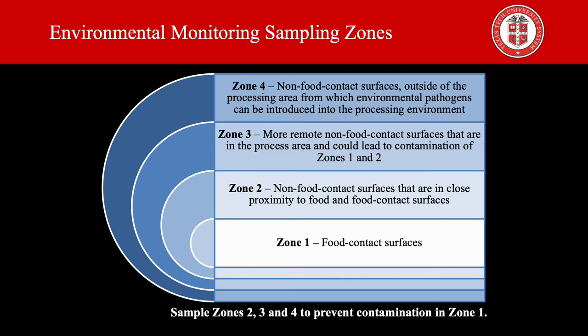And finally, zone 4 involves non-food contact surfaces outside the processing area from which environmental pathogens can be introduced into the processing environment. For example, locker rooms, offices, warehouses, freezers, cold storage, restrooms, loading docks, and maintenance shops.